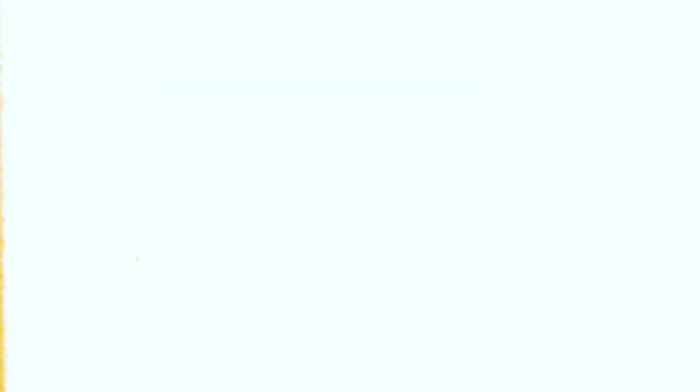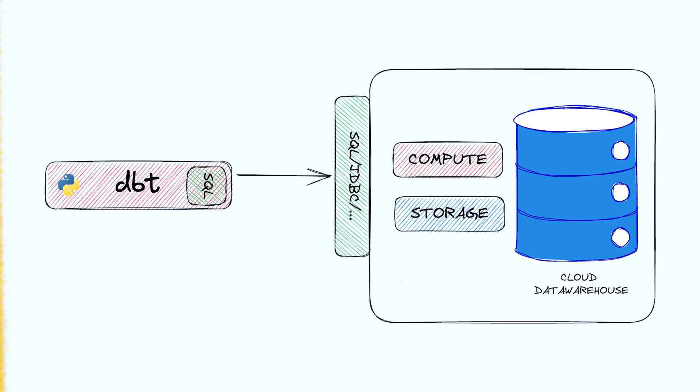dbt usually works great with a cloud data warehouse. You run a client — a Python process — that executes SQL queries. However, it's too bad that this cloud data warehouse can't be run on my laptop easily. It would help the development workflow, the CI, and other stuff. You didn't read the title of the video? So let's quack at how these two frameworks work together.